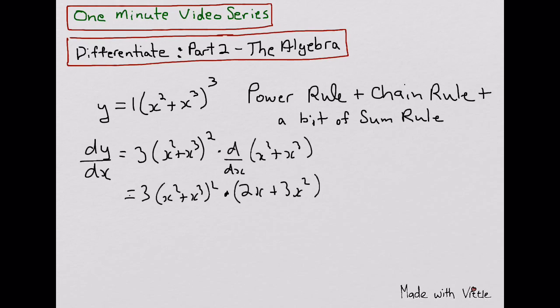Now let's use algebra to simplify this derivative. So we can use factoring here to take out an x squared from this term here, and that would leave me with 1 plus x all squared, and then here I can take out an x, and that would leave me with 2 plus 3x.